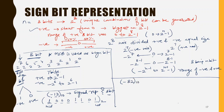Let us do one more example. If I want to convert minus 82 into binary using the sign bit method, the number of bits needs to be 8 bits. This is given — you have to work according to the system you have been given.